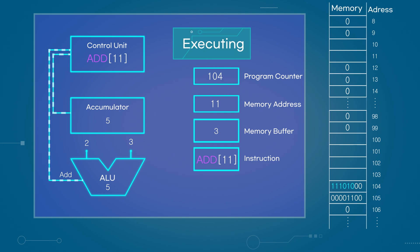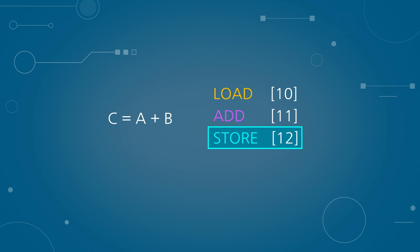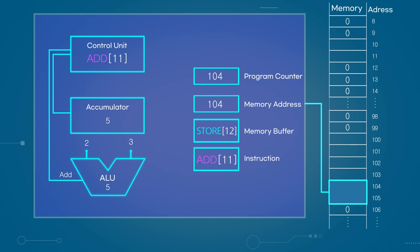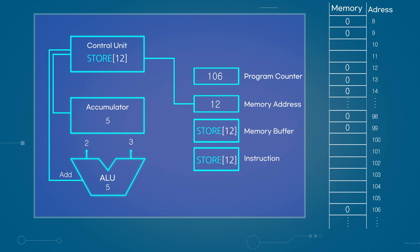All of these processes are controlled by the control unit. To process the final instruction, the address in the program counter is fetched again. The data at the address in the memory address register is retrieved. Since this is a store command, it is sent to the instruction register, and two is added to the program counter. The store command is decoded by the control unit, and the value is stored in memory address 12. The address 12 is loaded into the memory address register. The value stored in the accumulator register is transferred through the memory buffer register to memory address 12, completing the program.